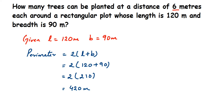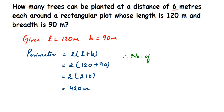420 divided by 6. For example, if the distance between each tree were 10 meters, we would divide the perimeter by 10 — in the same way we get the number of trees to plant. So the number of trees is equal to 420 meters divided by 6.